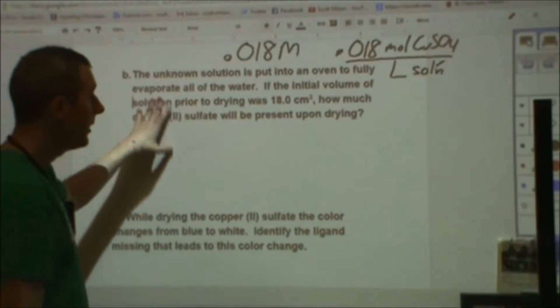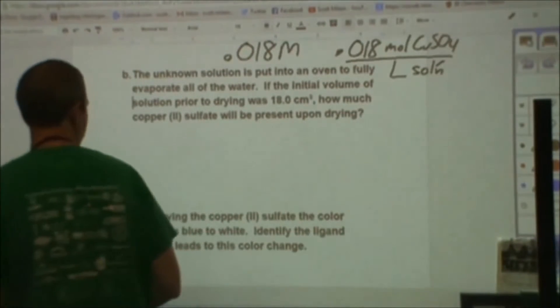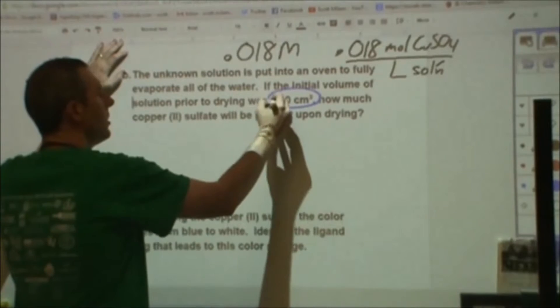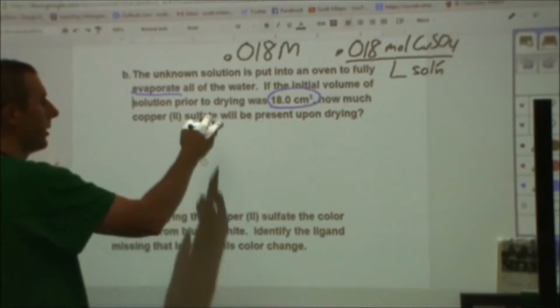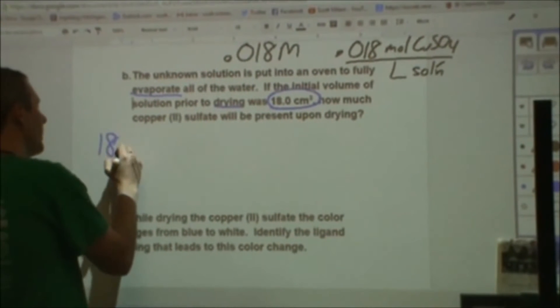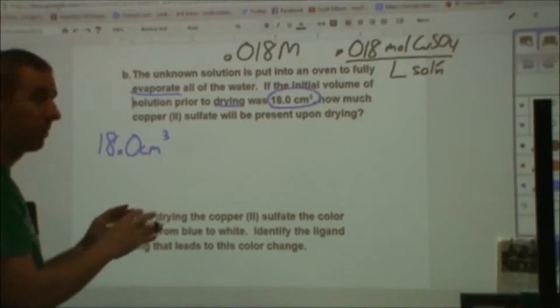Then in part b, it says, now that you've figured what the concentration is, let's ask you a question about the amount. This says we now have 18 centimeters cubed. We let it evaporate all the water so it's completely dry. How much will be there after that? Our given here is this 18.0 centimeters cubed. That's 18 milliliters.